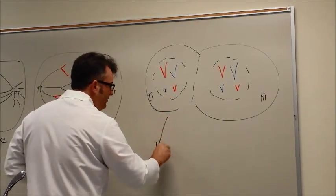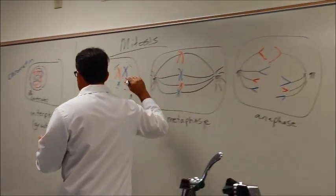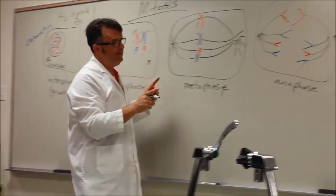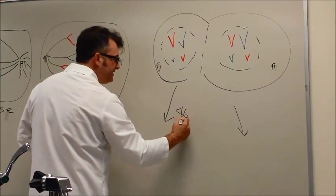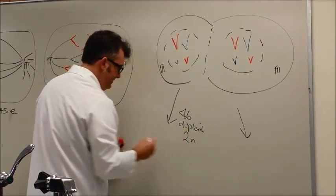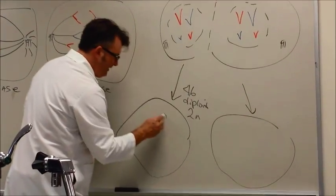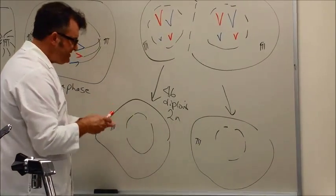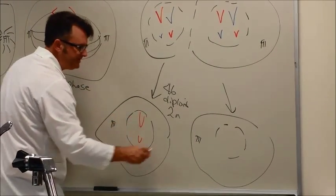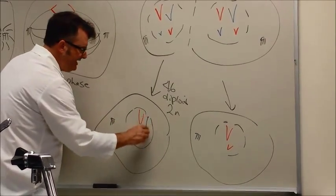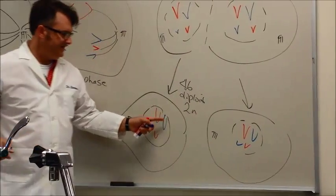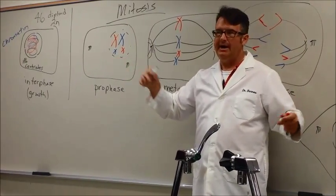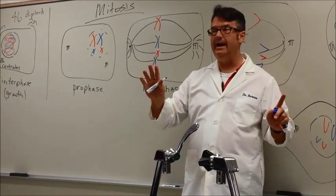When we start out with 46, which is diploid or 2N, we will end with two entities that are 46 diploid 2N. We've got two cells, each with an intact nucleus and a centriole. This baffled me for a long time. I did not understand how this worked. I looked at this and said that does not look like what I started with. It looks like something got cut in half. How do I get the same number in the end if something got cut in half?